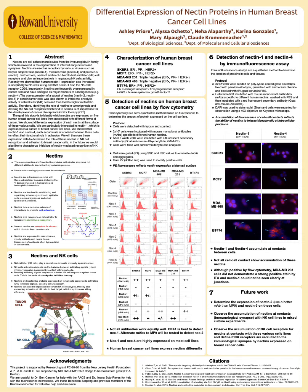In the near future, we would also like to characterize inhibitors of Nectin-mediated recognition of NK cells. As shown in Box 4, the five human breast cancer cell lines we have examined are characterized by two hormone receptors and one human growth factor receptor. Clinically, if a cancer cell line has triple negatives for all three receptors, it is more resistant to available treatments. The two methods we have used to identify differential expression of Nectins are flow cytometry and immunofluorescence assays.